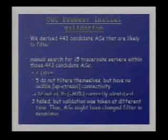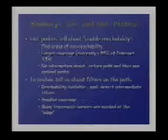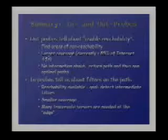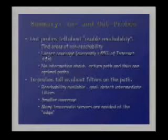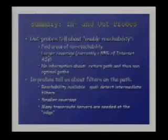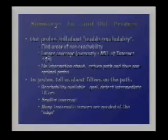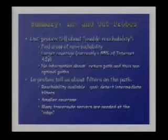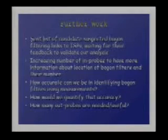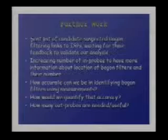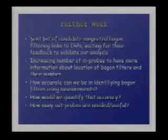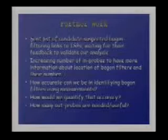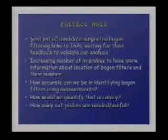We do intend to repeat this. Out-probes told us about reachability and where you can and can't get to — much better coverage but don't tell us about the return path, non-optimal paths, or where diversion is happening. Whereas in-probes tell us about filters on the path with much smaller coverage. We have a list of suspected bogon filterings, and we've gotten feedback — people said oops, sorry about that. We're trying to get an increasing number of in-probe sites from which to trace route so we can detect better.